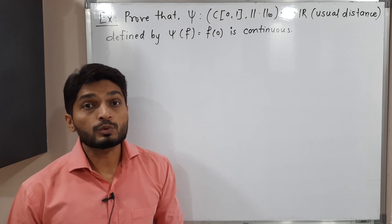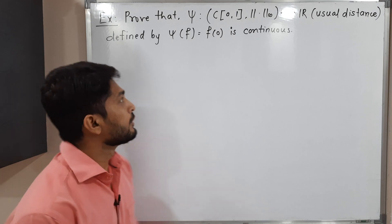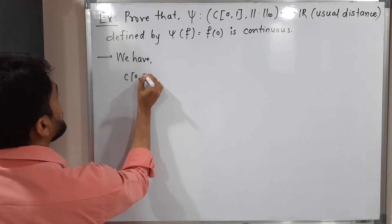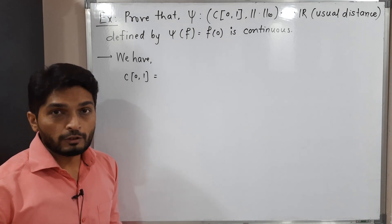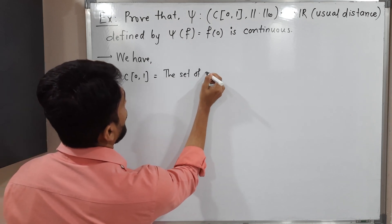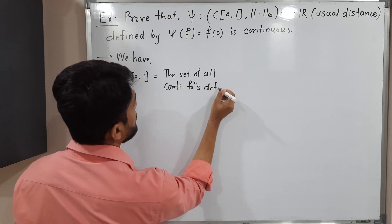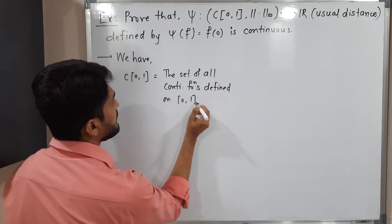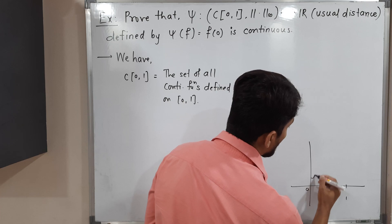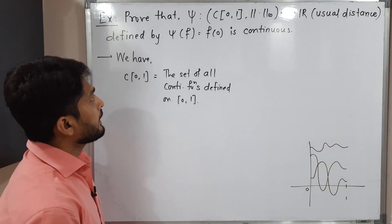Let us start with the given information. ψ is defined on this metric space, so let us talk about that metric space first. We have C[0,1], which represents the set of all continuous functions defined on the closed interval [0,1]. We can have plenty of continuous functions on this closed interval, and it is the set of all such continuous functions with norm infinity.